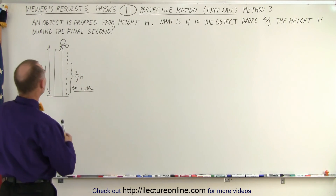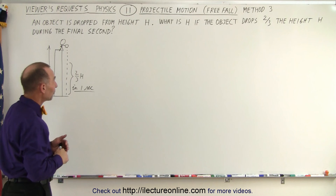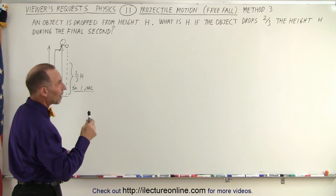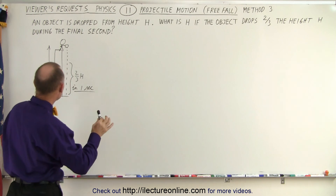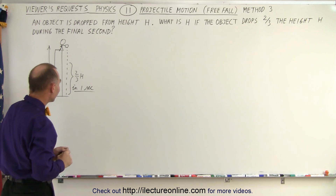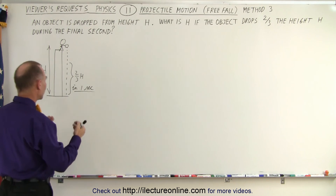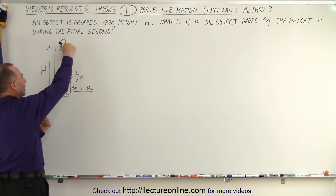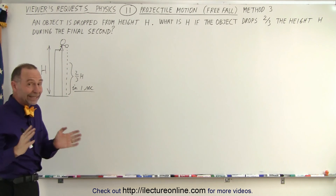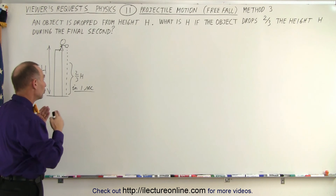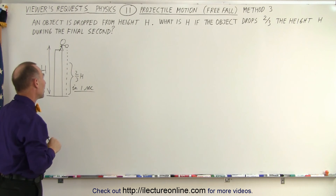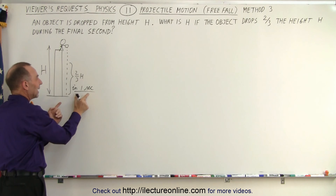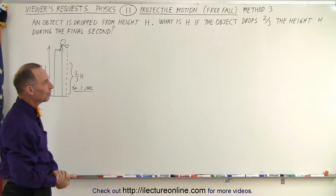What is the problem? The problem reads as follows: An object is dropped from a height h. What is h if the object drops two-thirds of the height h during the final one second of its fall? We drop an object from an unknown height h, and we don't know how long it takes or how fast it's traveling, but we do know that two-thirds of the total distance is traveled in the last one second.